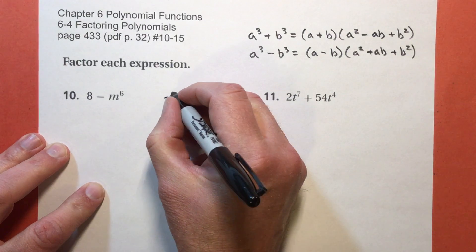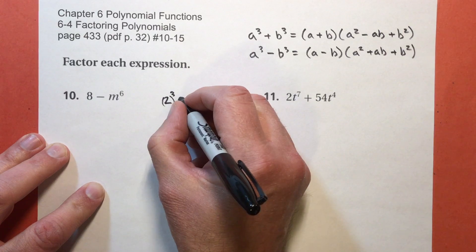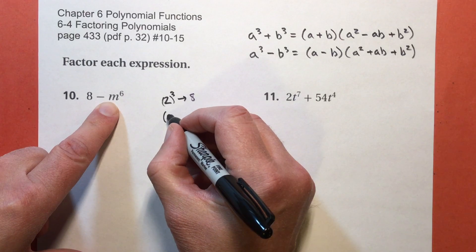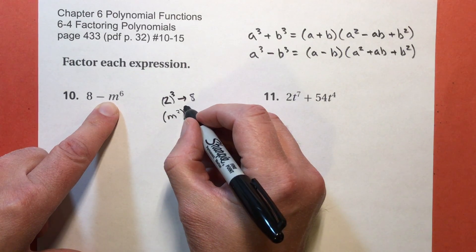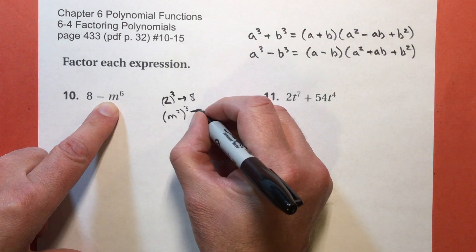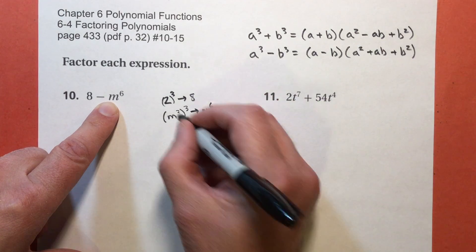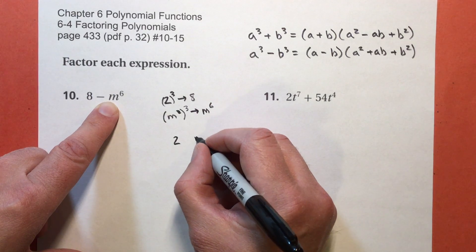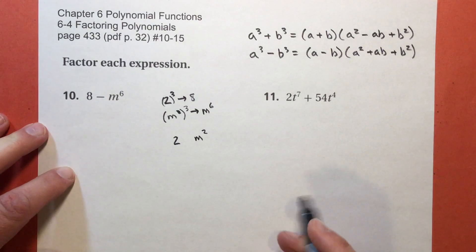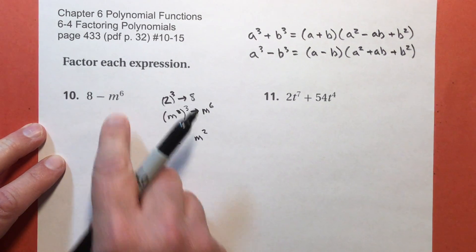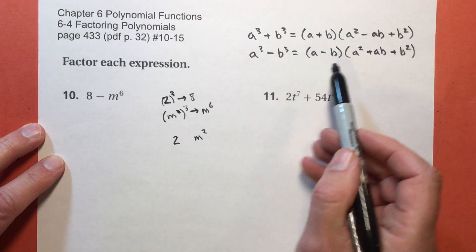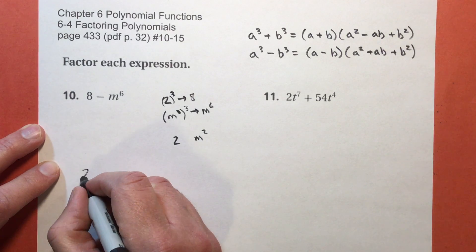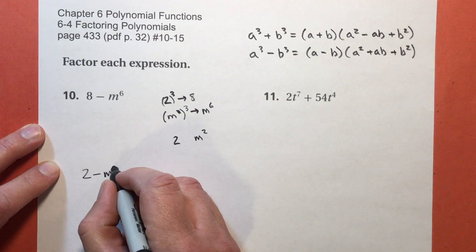So this 2 to the third power gives me my 8. That's that. But what about this? If I have m to the second power, and then I cube it, I end up with m to the sixth power. So what am I going to use? I'm going to use my 2, and I'm going to use the m to the second power. So my pattern here, I'm going to subtract. So that's this one. So I have, I don't have room here.